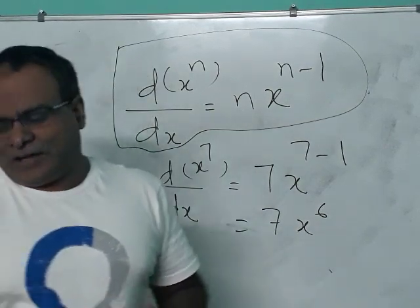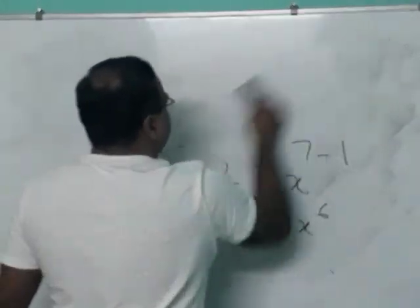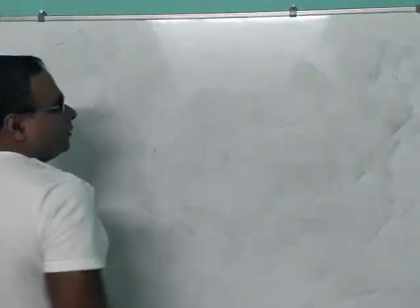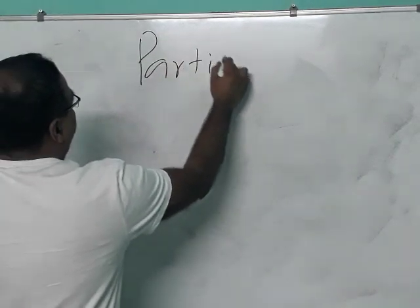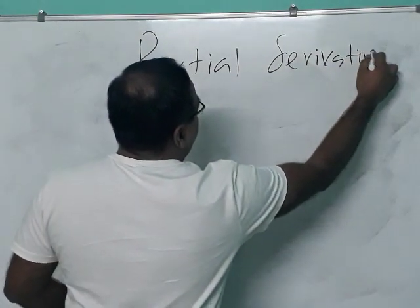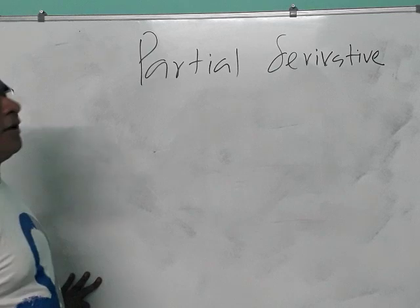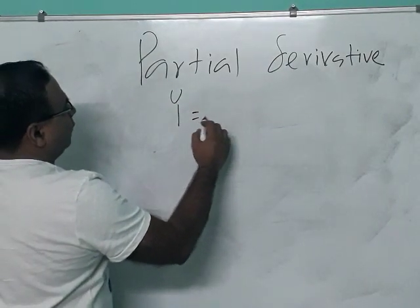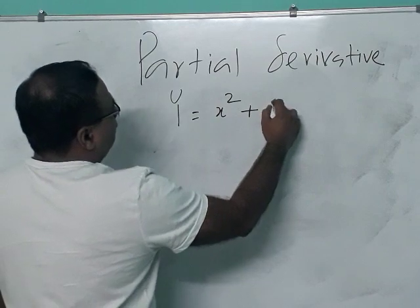I will talk a little about partial derivatives. That comes when there are two variables. For example, you have the equation y equals x squared plus y cubed. When you differentiate this equation, there are two variables.